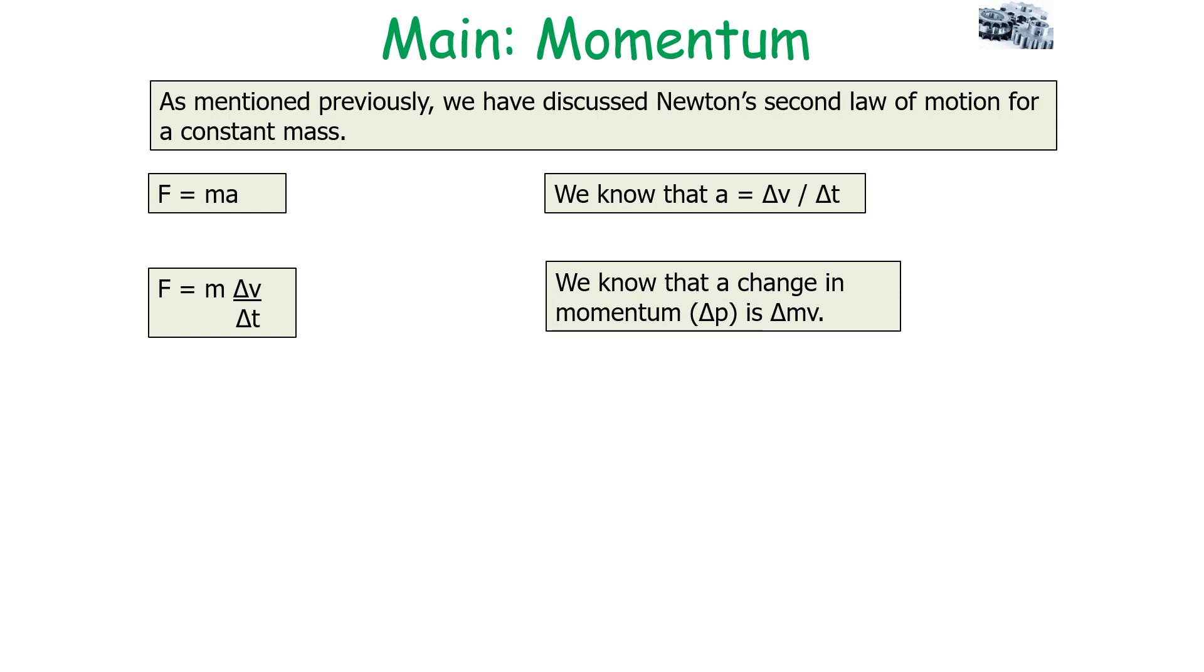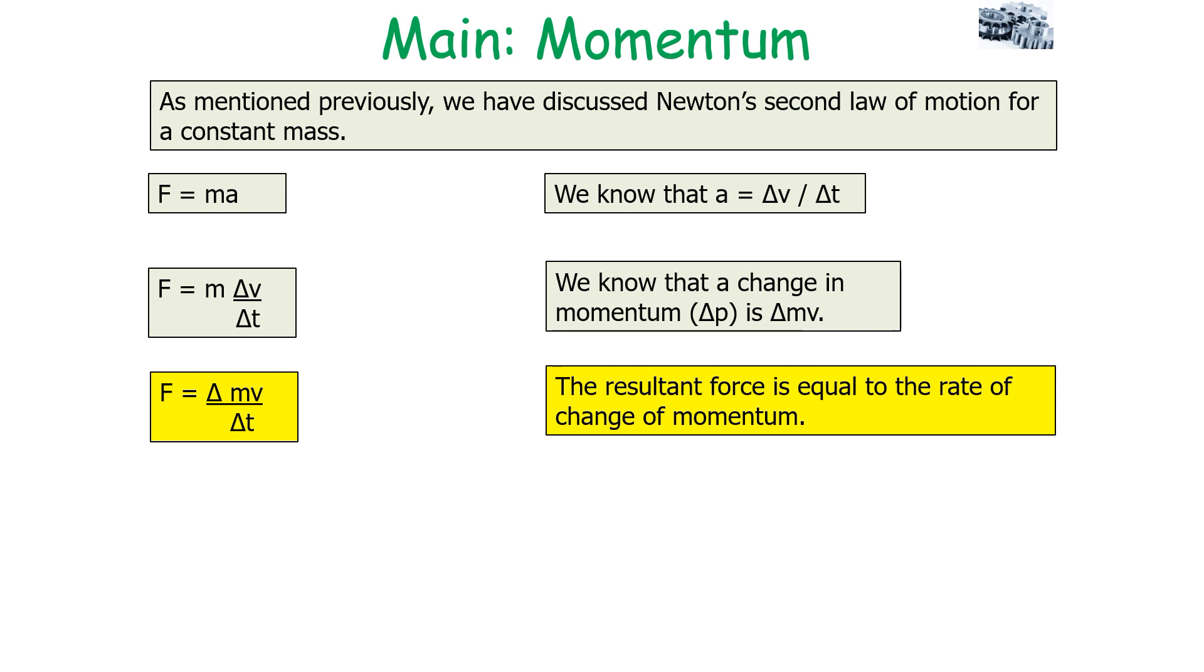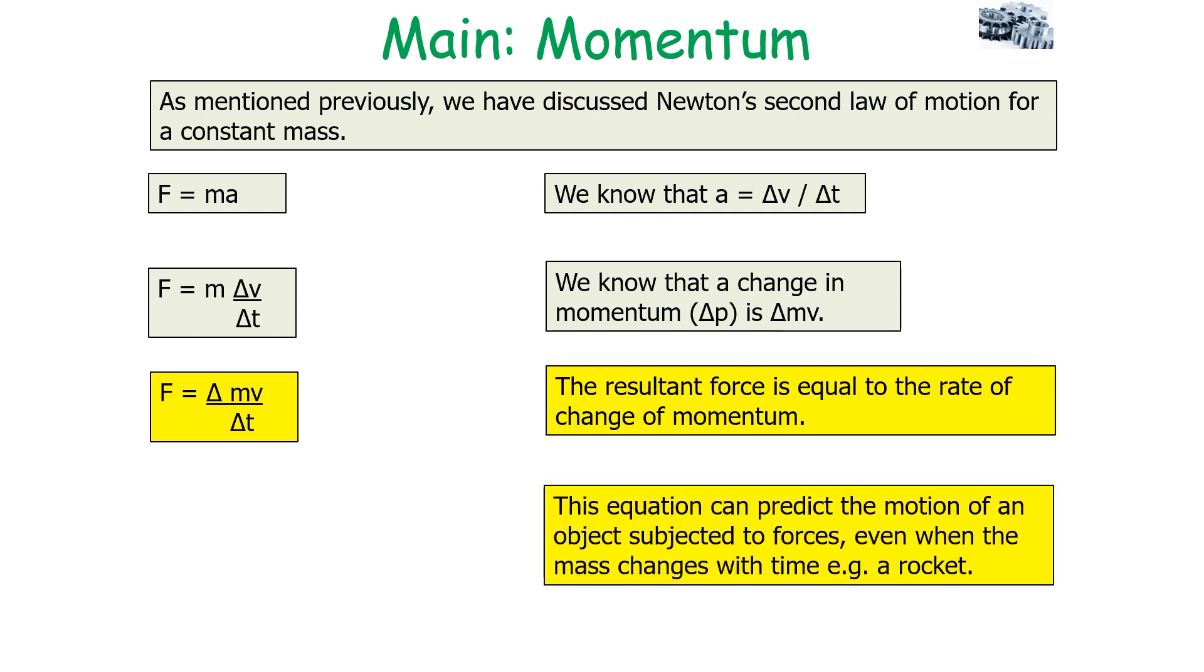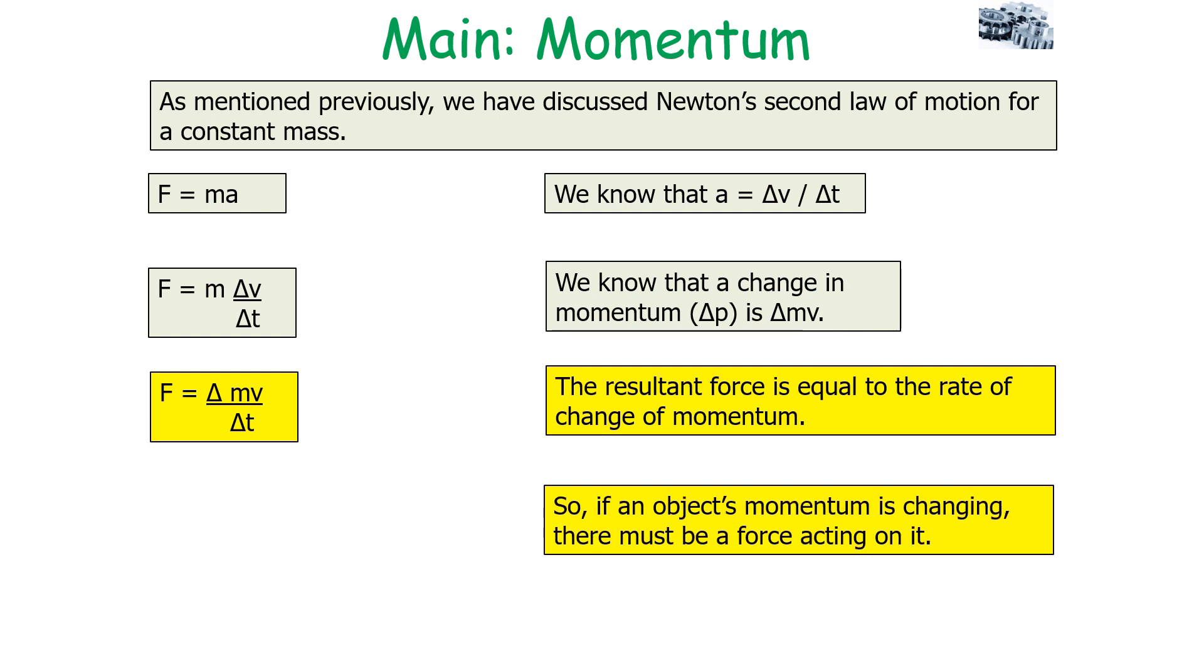We know the change in momentum, delta p, is equal to delta mv. So therefore, if we said F equals delta mv over delta t, this tells us that the resultant force is equal to the rate of change of momentum. This is a really fundamental equation in physics because it can predict the motion of an object subjected to forces even when the mass changes with time. This statement also effectively defines what was meant by a force in physics—it's an interaction that causes an object's momentum to change. So if an object's momentum is changing, there must be a resultant force acting on it.